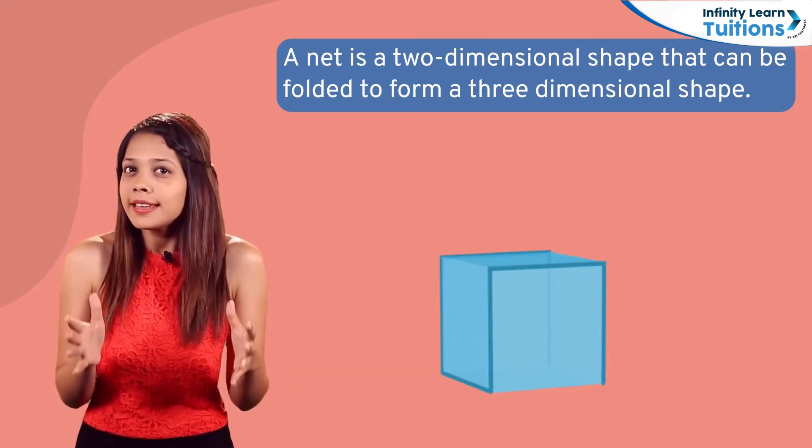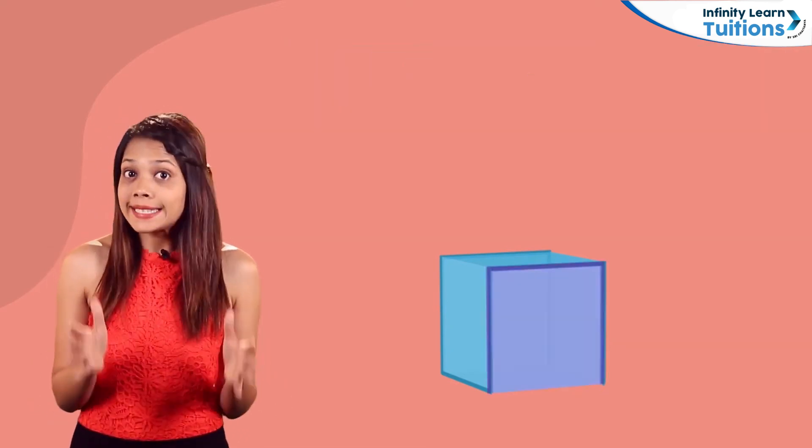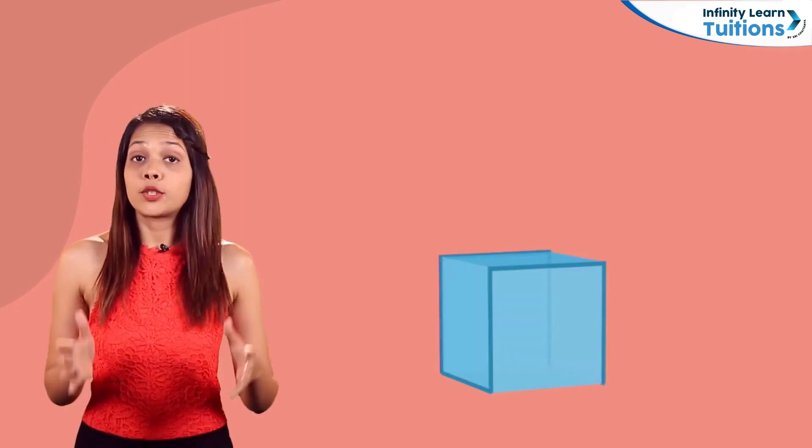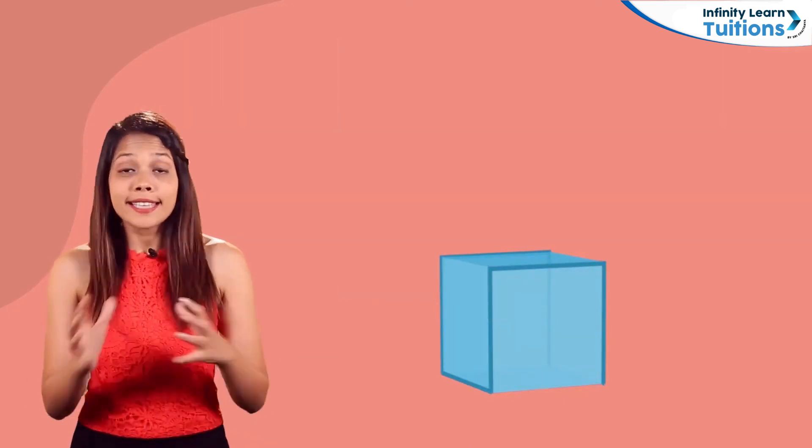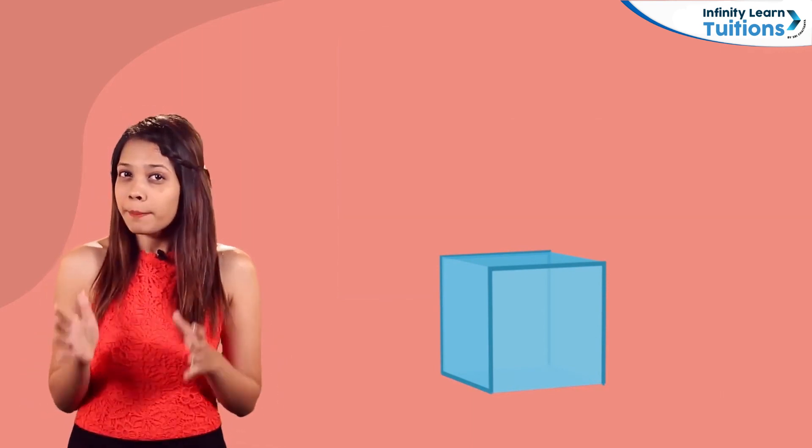Let's see if there are other net patterns for a cube. We know that a cube has six square faces, so its net is made up of six squares attached to one another along their edges in a specific pattern.